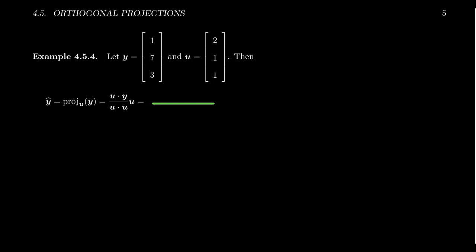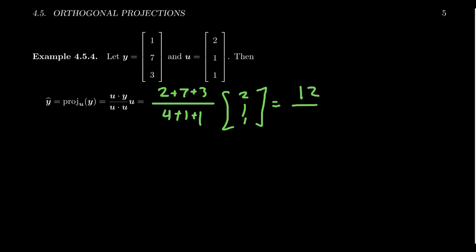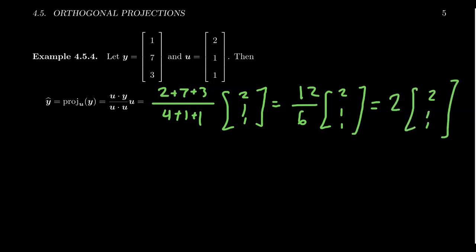We compute u · y = 2 + 7 + 3 for the numerator, and u · u = 4 + 1 + 1 for the denominator, then multiply by u = [2, 1, 1]. Simplifying: 2 + 7 + 3 = 12, and 4 + 1 + 1 = 6, so we get (12/6) times [2, 1, 1], which is 2 times [2, 1, 1].